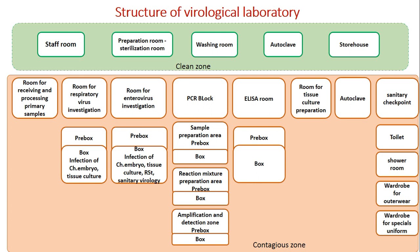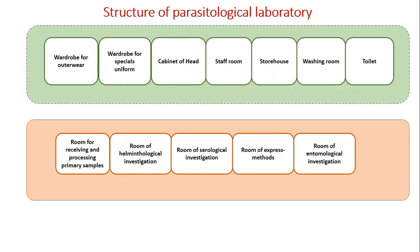The virological laboratory also includes a block for PCR, a block for ELISA, a test room for tissue culture preparation, autoclave, and a treatment center checkpoint with areas for outdoor wear, uniform, toilet, and shower room. The structure of a parasitological laboratory also has two zones: a clean zone for administrative work, and a zone for work with parasites, including helminthology, serological investigation, a room for express methods, and a room for entomological investigation to study insects.